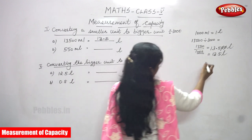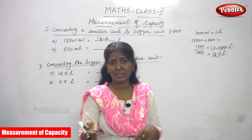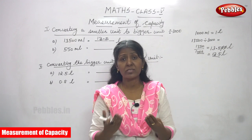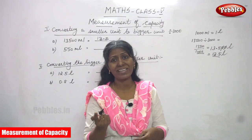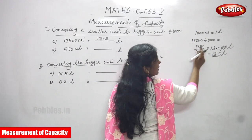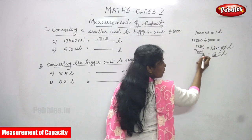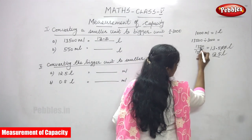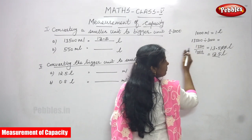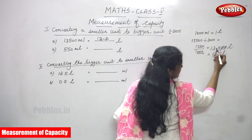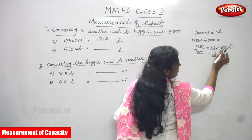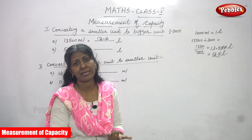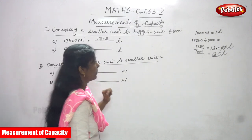To repeat: smaller unit into bigger unit, you divide by one thousand. The formula is one liter equals one thousand ml. So thirteen thousand five hundred divided by one thousand — move three decimal places to the left: zero zero five, then the point, then one three. That gives thirteen point five zero zero liter. After the point, do not consider the zeros, so the answer is thirteen point five liter.